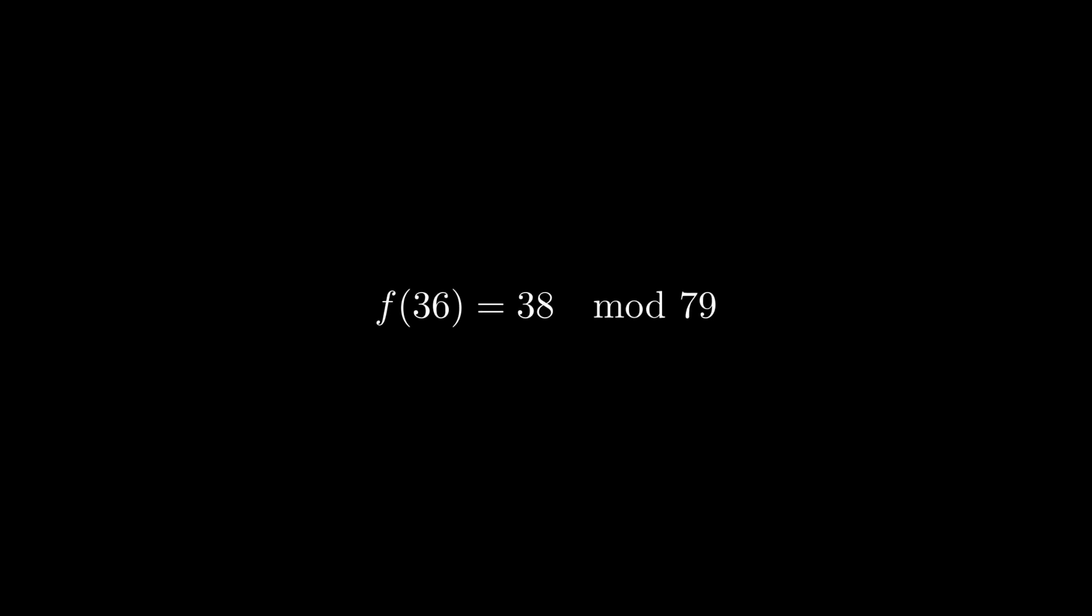This way of doing things is pretty slow though, and as it turns out, we can do modular exponentiation much faster than this. It relies on a couple of tricks and properties of the exponent. Firstly, we look at the exponent and represent this as a sum of powers of 2, so 36 is equal to 2 squared plus 2 to the 5th.